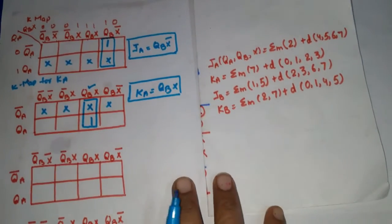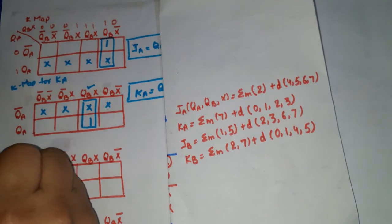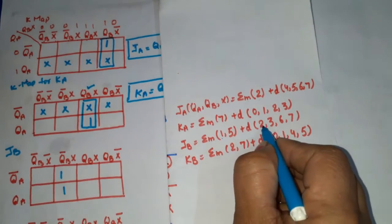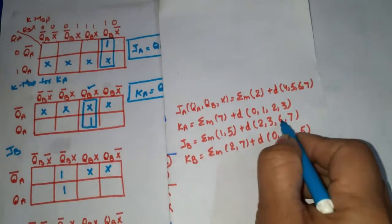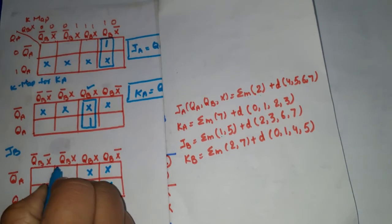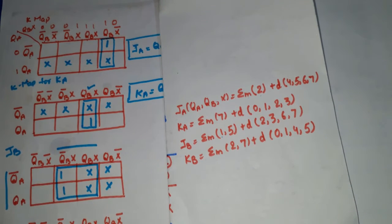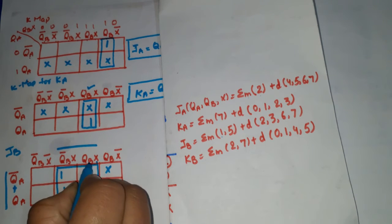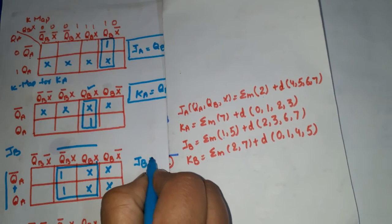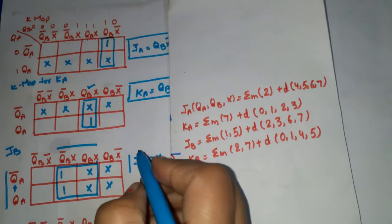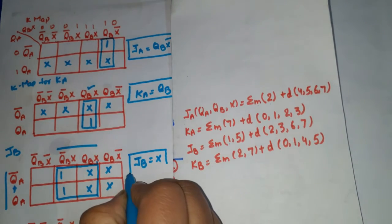For JB: minterms 1 and 5, don't cares at 2, 3, 6, 7. The simplified equation gives JB = X.